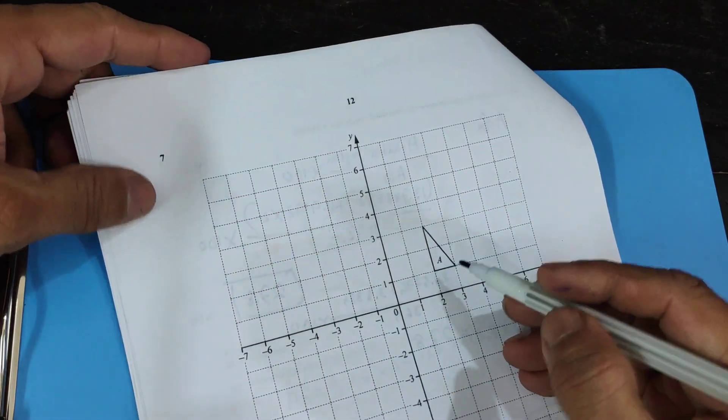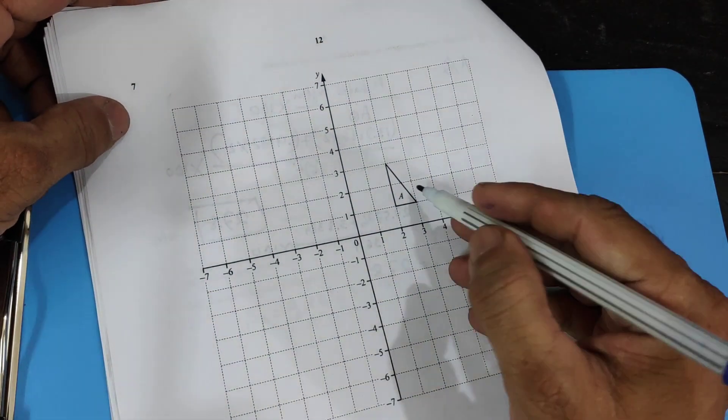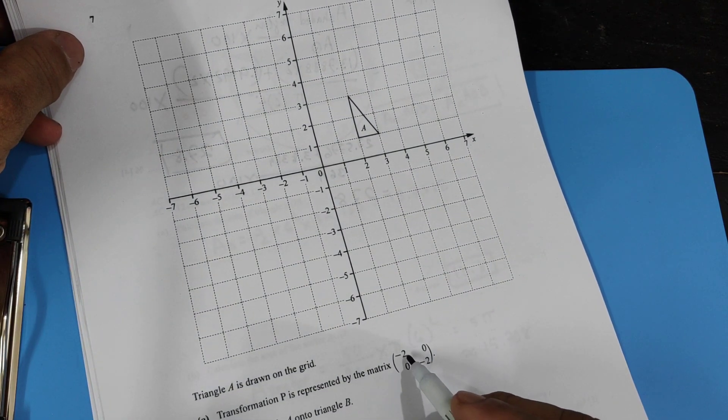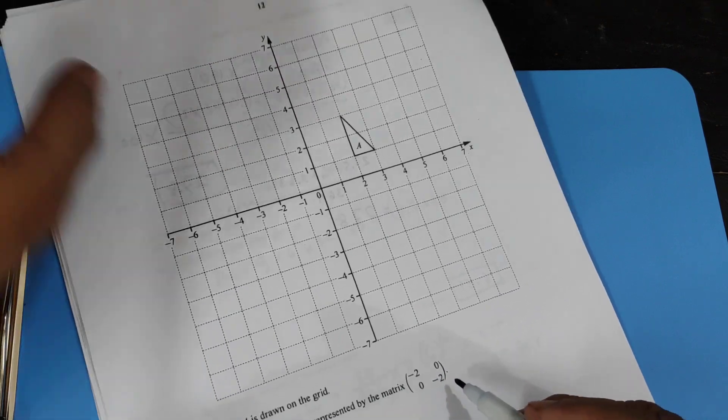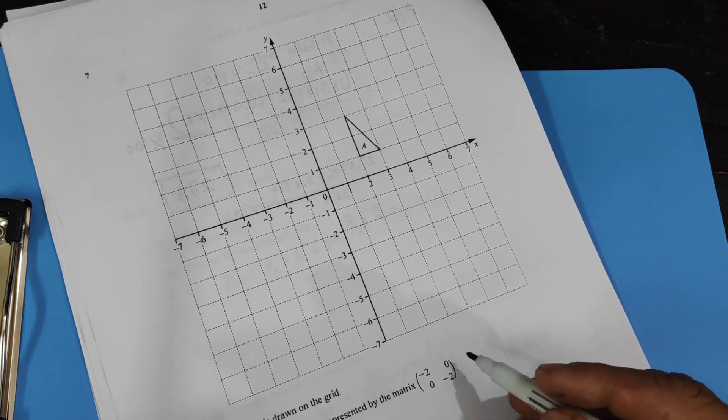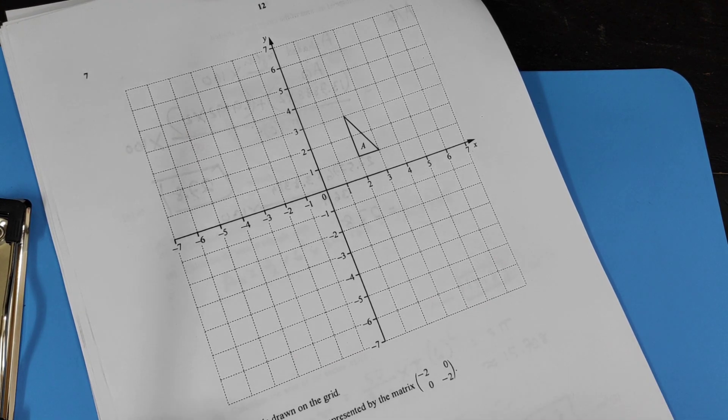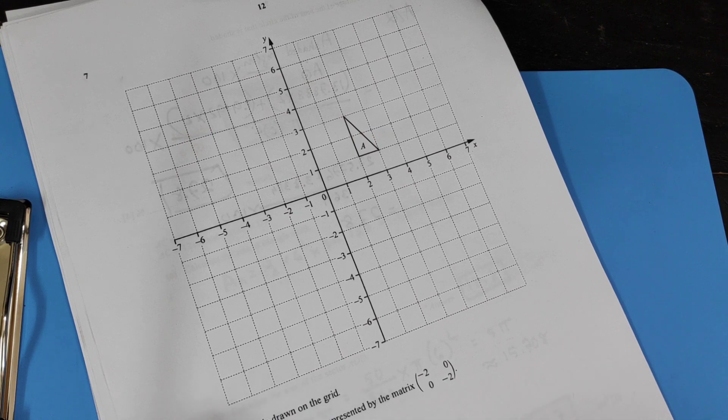This is a transformation. Triangle A is drawn on the grid. Transformation T is represented by the matrix minus two, zero, zero, minus two. You know that this is an enlargement with scale factor minus two with center zero, zero. T maps triangle A onto triangle B.